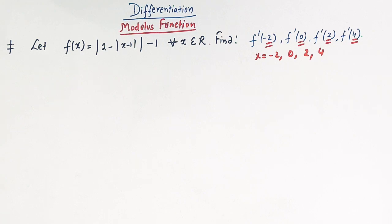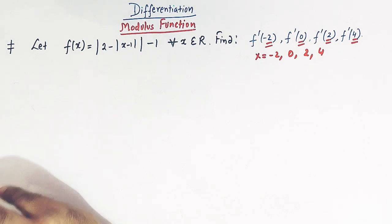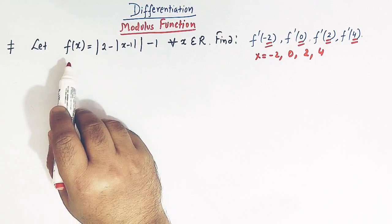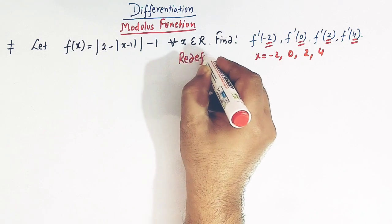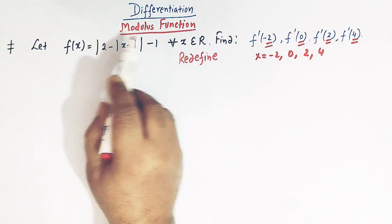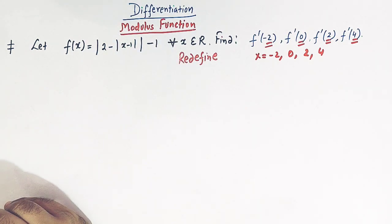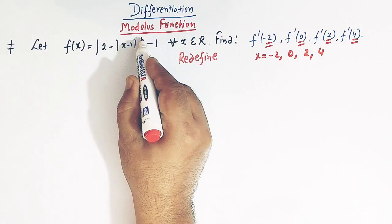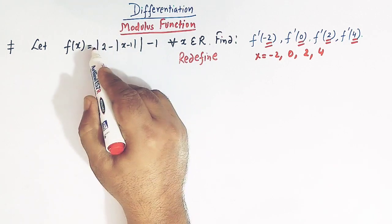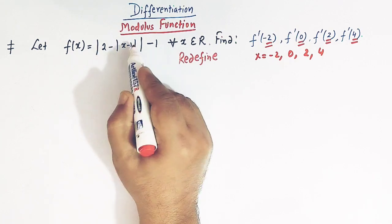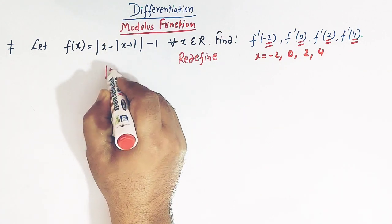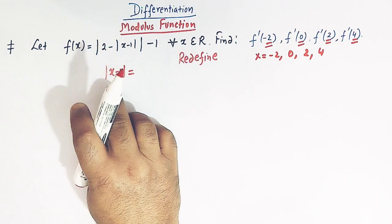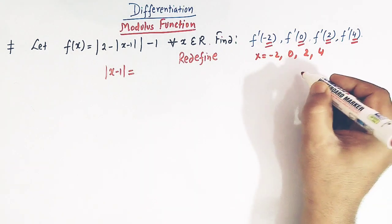Whenever we come across functions involving the modulus function, what we usually do is first try to redefine the function f(x). So the first step is to redefine this function which involves the modulus or absolute value function. Here we have a mod sign, and inside it we have one more mod sign, that is |x - 1|. So let us first define |x - 1|, making use of the usual definition of the modulus function.